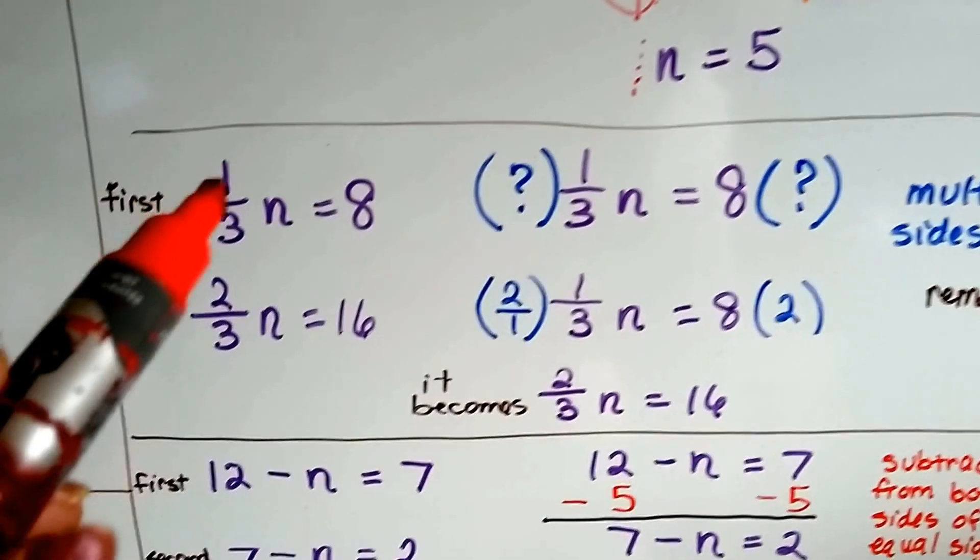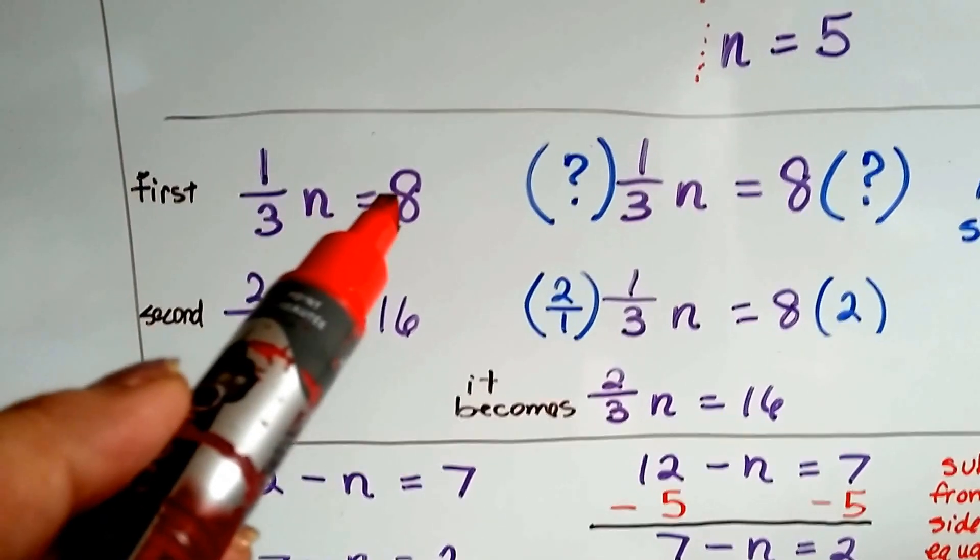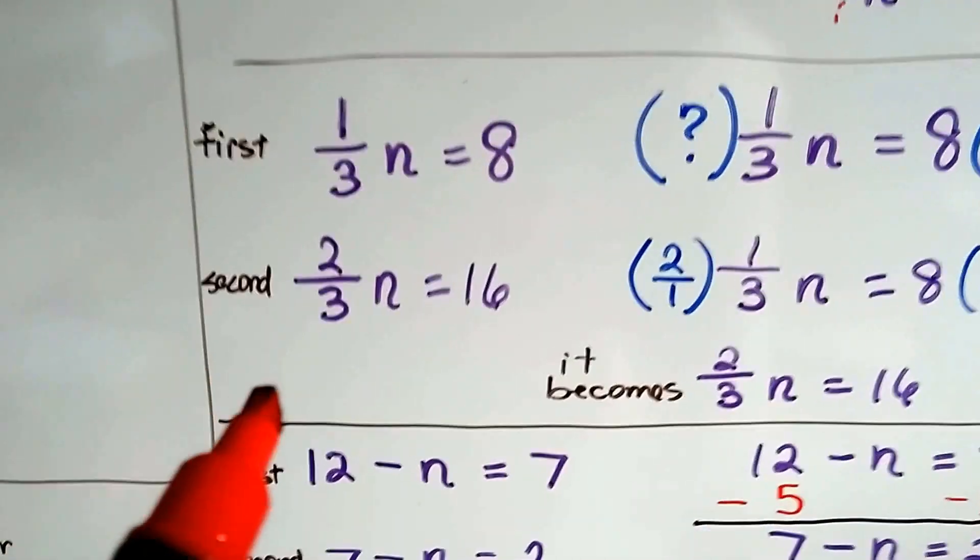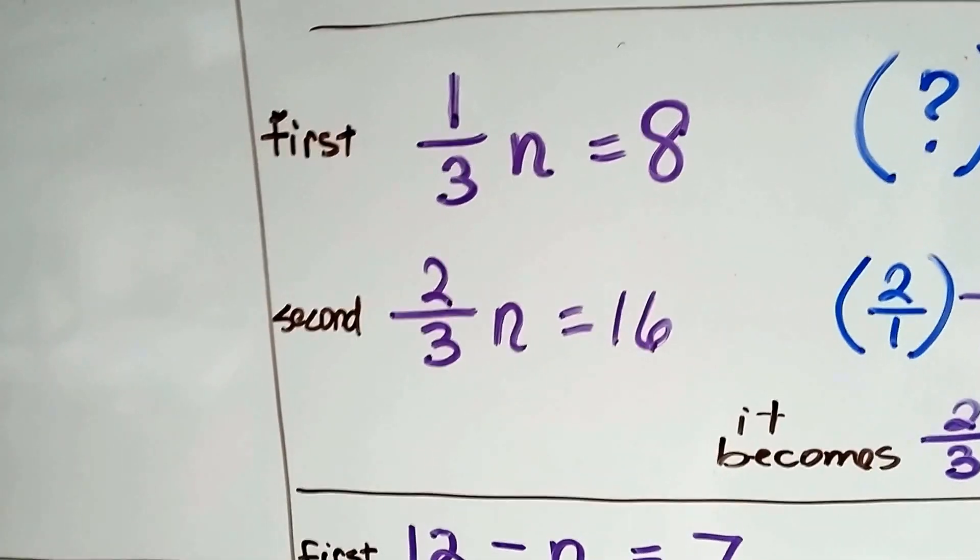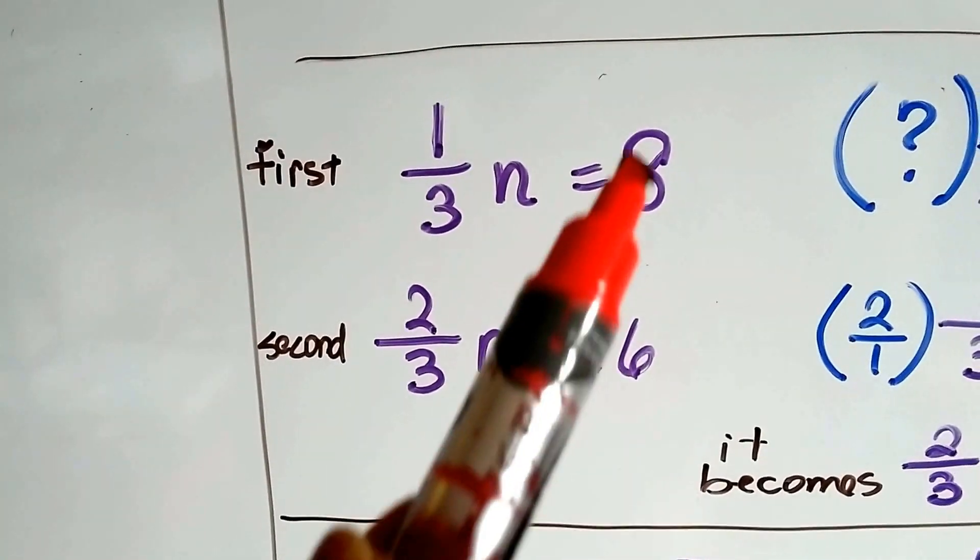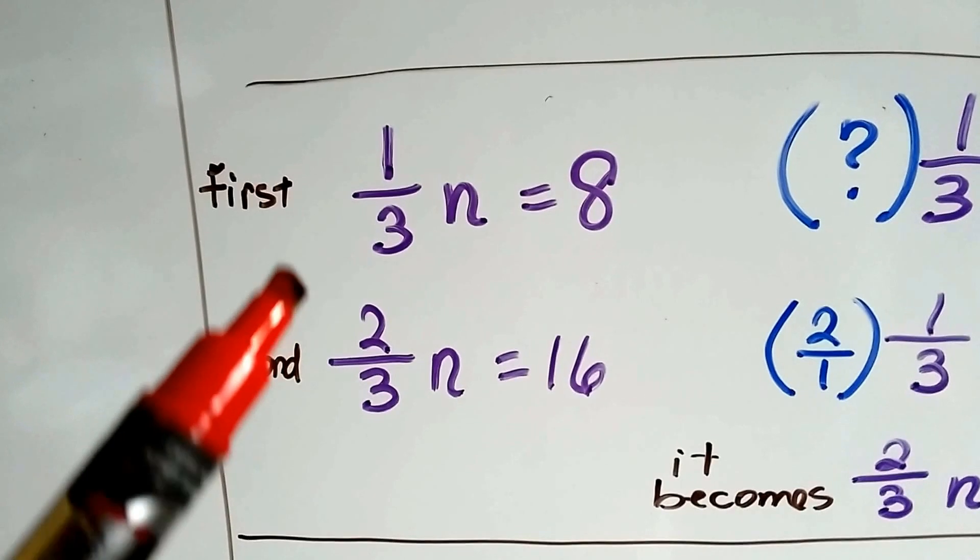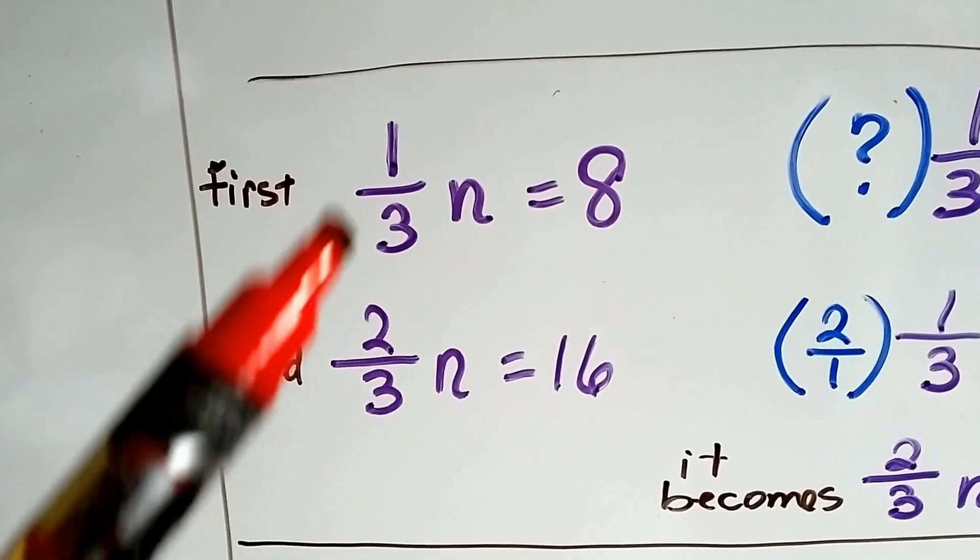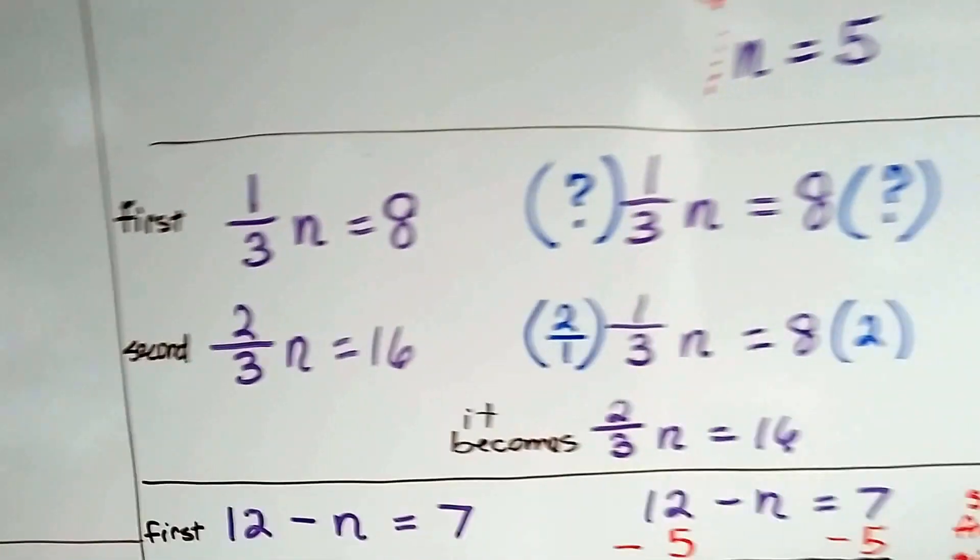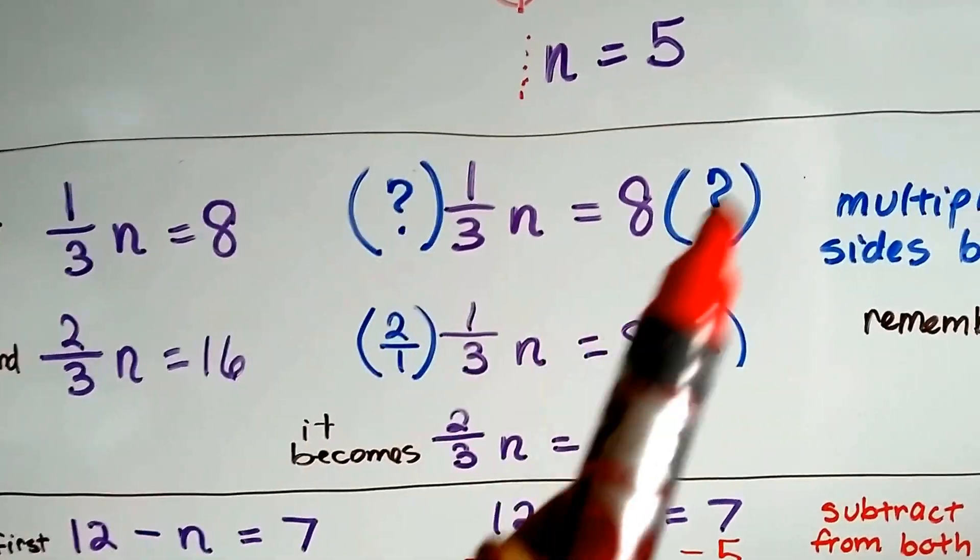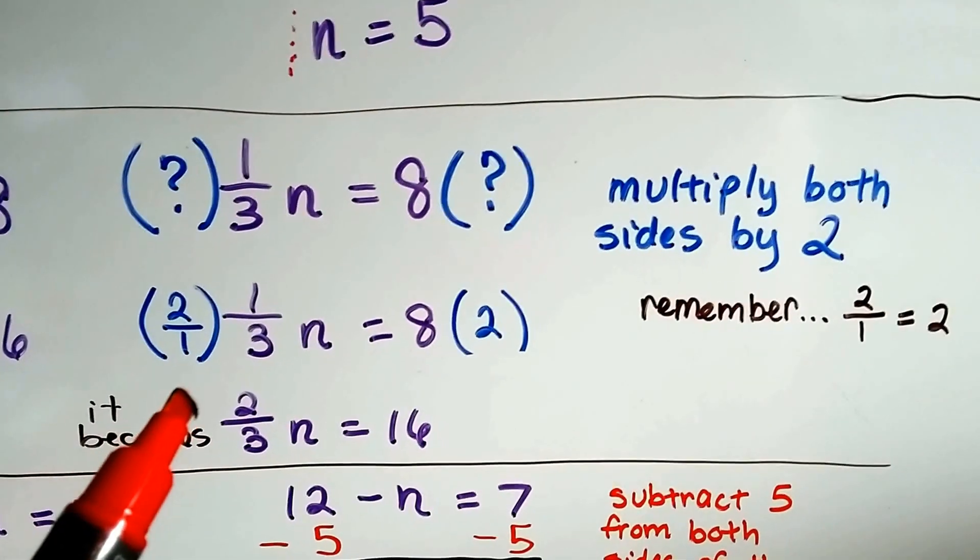What did we do to this fraction times n equals 8 to get this 2 thirds n equals 16? What do you do to 8 to get a 16? Well, you multiply it by 2. What do you do to 1 third to get to 2 thirds? We multiply that by 2. So what happened to each side of this equation? We multiplied both sides by 2.